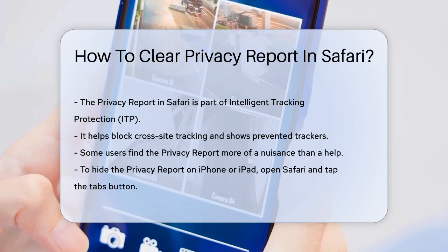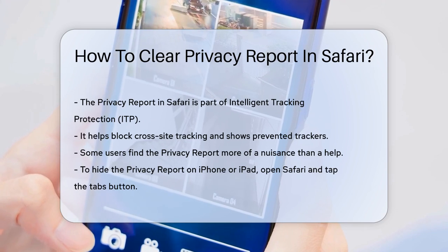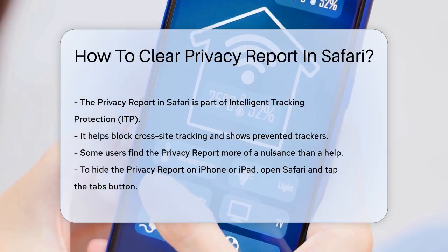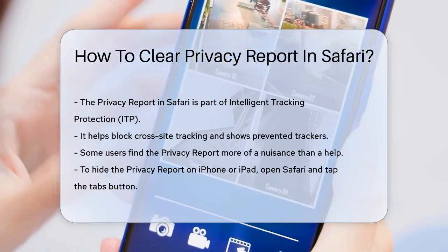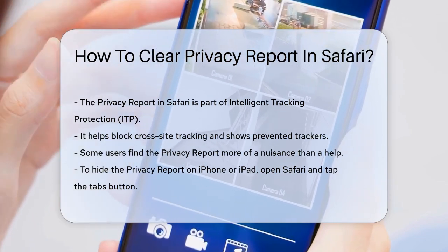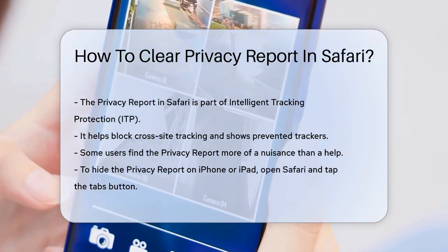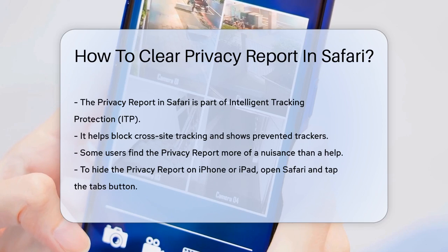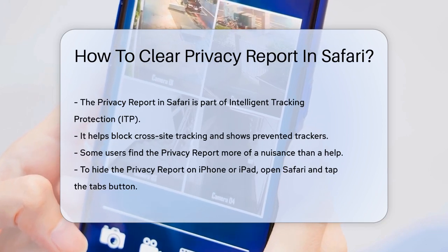First, let's understand what the privacy report is. It's part of Safari's Intelligent Tracking Protection, ITP, that blocks cross-site tracking and shows you which trackers have been prevented from profiling you. It's a great feature for privacy, but if you're not interested in seeing it every time you open Safari, here's what you can do.